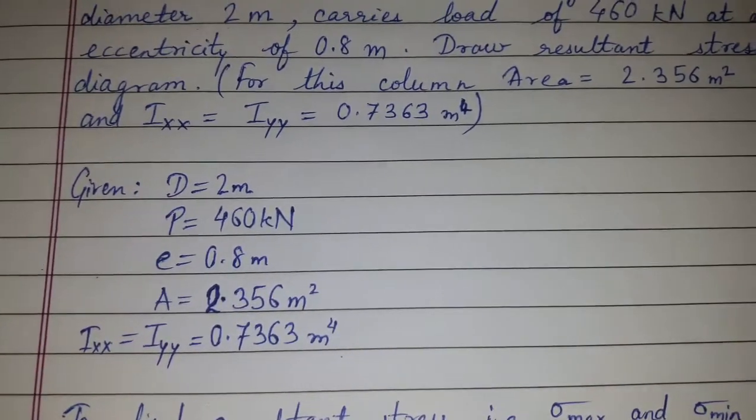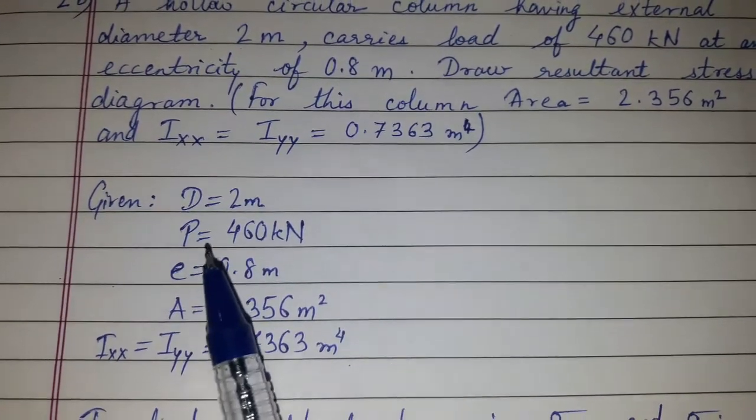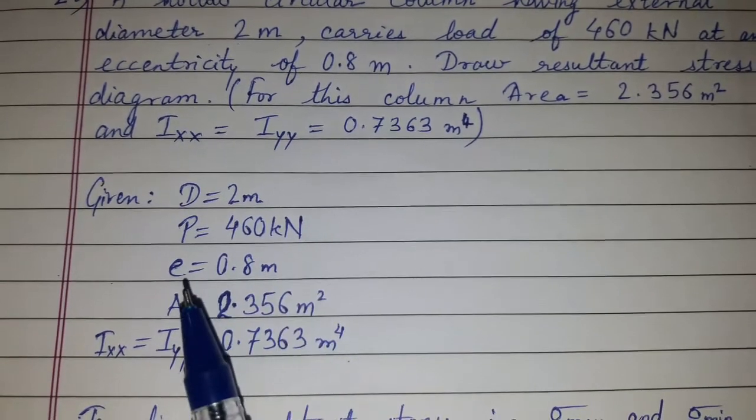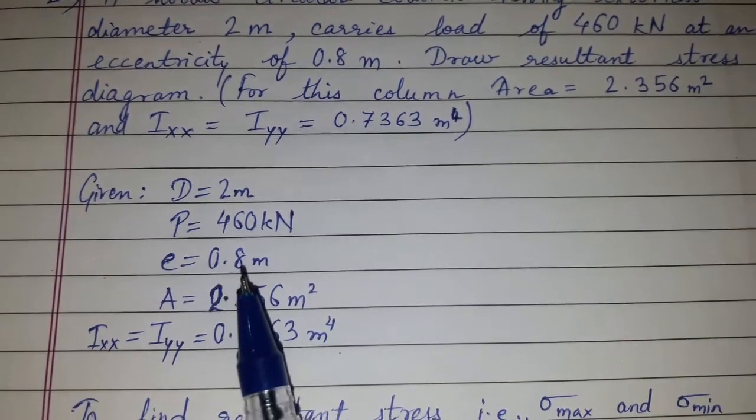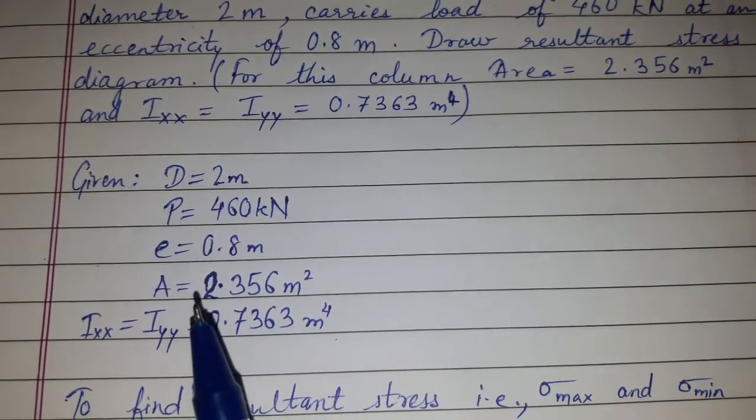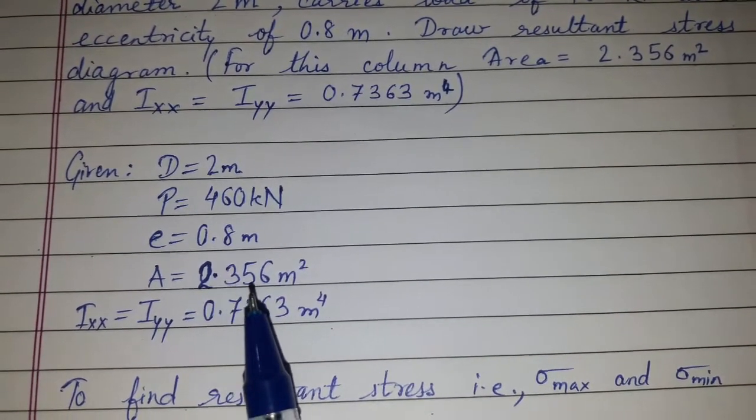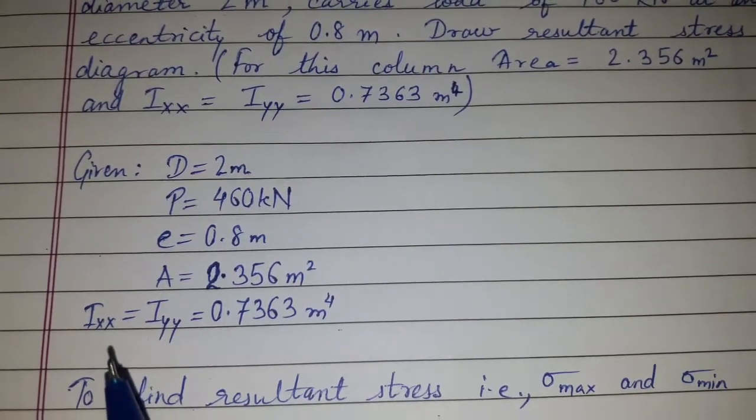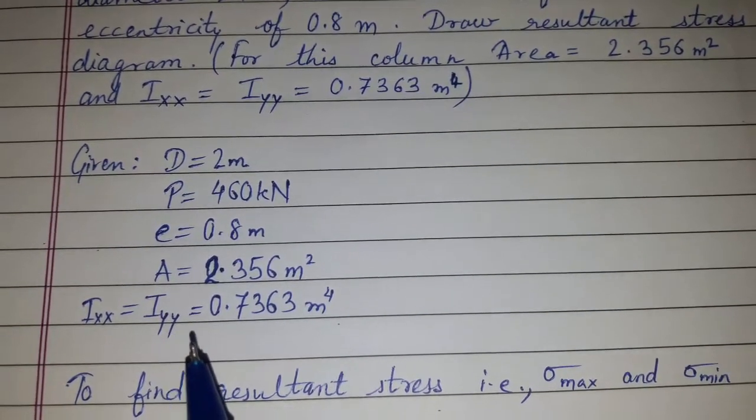So here the external diameter is given, the load is given 460 kN, eccentricity E is 0.8 m. The inner diameter is not given, instead the area is directly given as 2.356 m² and Ixx equals Iyy is given.